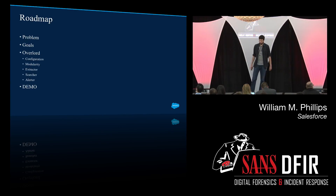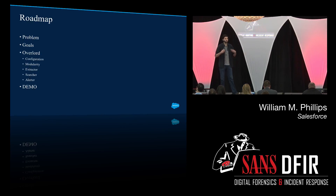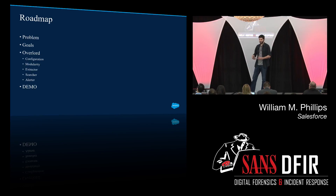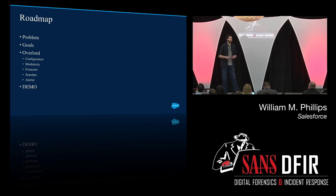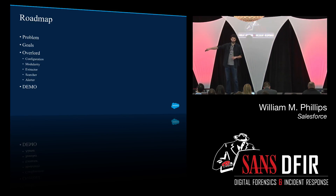Let's start with a brief roadmap of what I'm going to cover. I'm going to go over the problem and then talk about the goals — the way we saw the goals. As Ishmael was talking about, this is a very specific solution to our problem, so our goals may be different than everybody else's. Then I'm going to do a deep dive into Overlord, talk about how it was built, all the methodology behind the different components, and then we're going to do a demo. Because of how awesome SANS is, it's all recorded, so it will work theoretically.